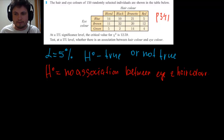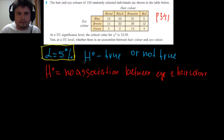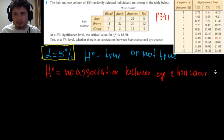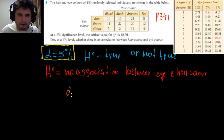Our significance level is going to be 5%. For this significance level, our chi-square critical value is given to us as 12.59. We can actually find the degrees of freedom ourselves by using a formula from the book.